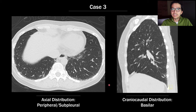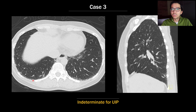In the third case, we have peripheral or subpleural fibrosis that is basilar predominant, but the degree of fibrosis is very mild. There is no honeycombing, just a bit of ground glass and reticulation — it's just not enough disease to meet the threshold. I would call this one indeterminate for UIP.